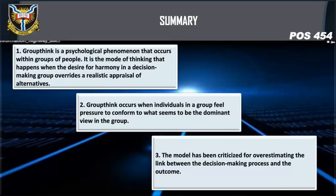In summary: groupthink is a psychological phenomenon that occurs within groups of people. It is a mode of thinking that happens when the desire for harmony in a decision-making group overwrites a realistic appraisal of alternatives. Groupthink occurs when individuals in a group feel pressure to conform to what seems to be the dominant view. The model has been criticized for overestimating the link between the decision-making process and the outcome. End of lecture 10 — thanks for listening.